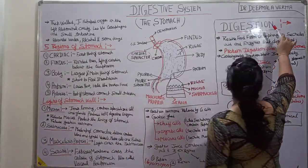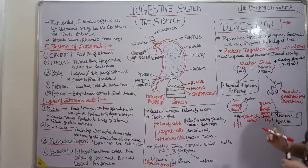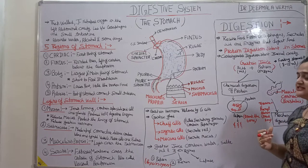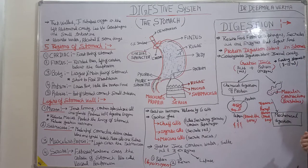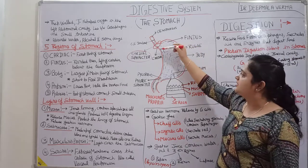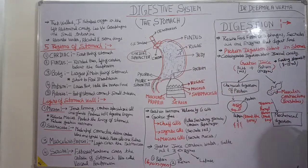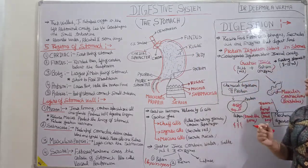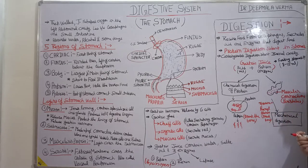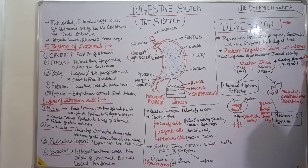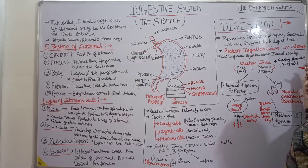Next, digestion in the stomach. The stomach receives food from the oesophagus and secretes acids and enzymes that digest the food. The cardiac sphincter is present here and prevents backward movement of food. Protein digestion starts in the stomach, while carbohydrate digestion starts in the buccal cavity. In the stomach, gastric juice is released by the gastric glands.